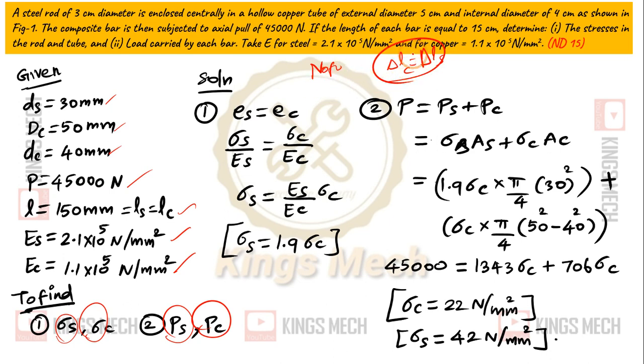P is nothing but PS plus PC. Sigma S into AS plus Sigma C into AC.